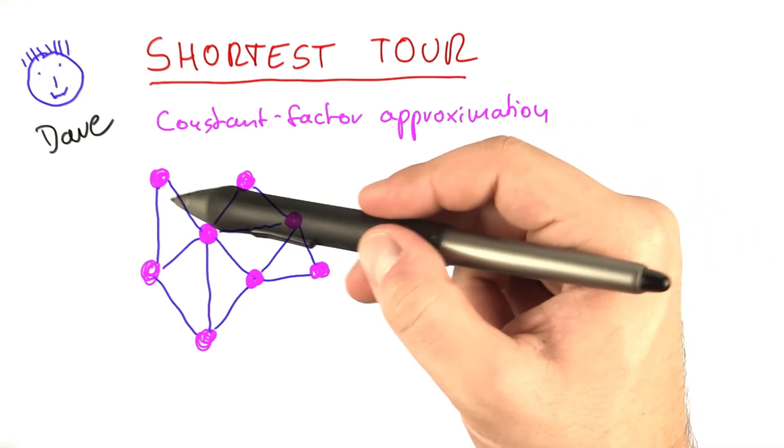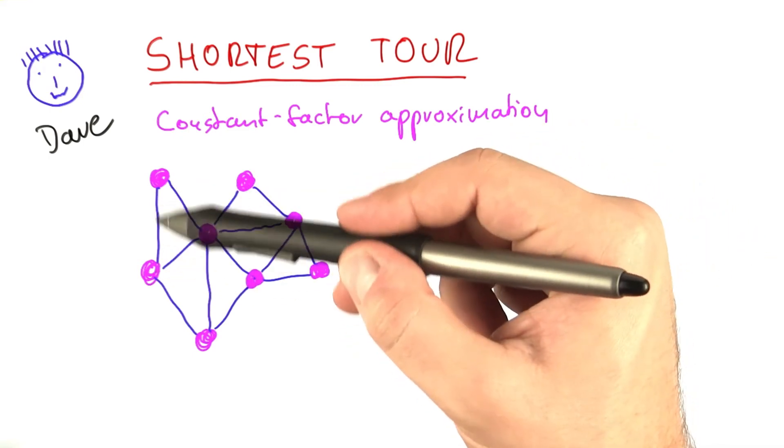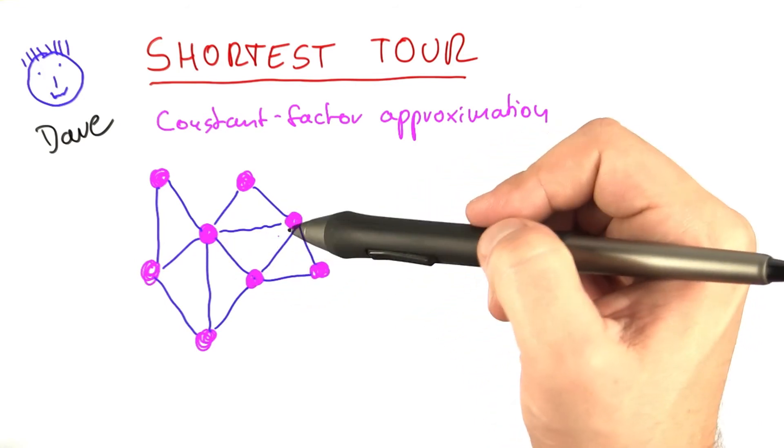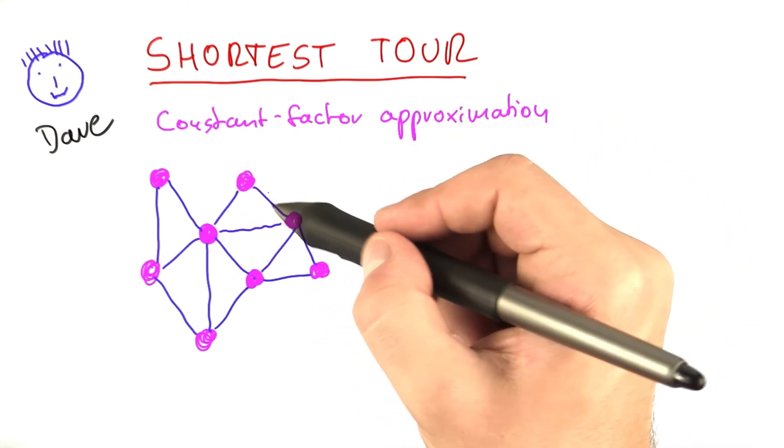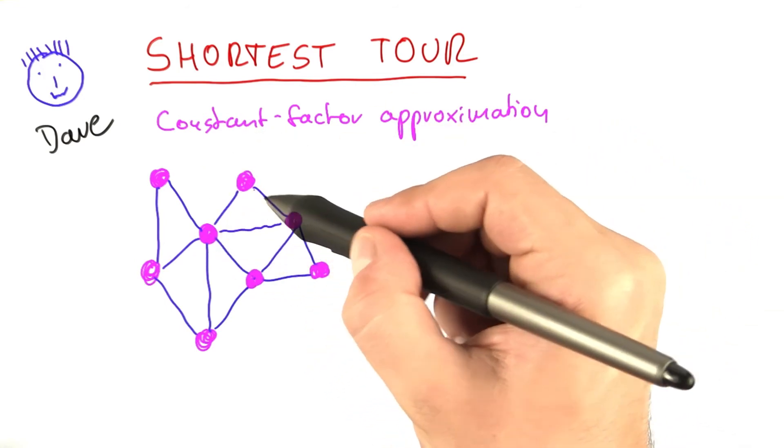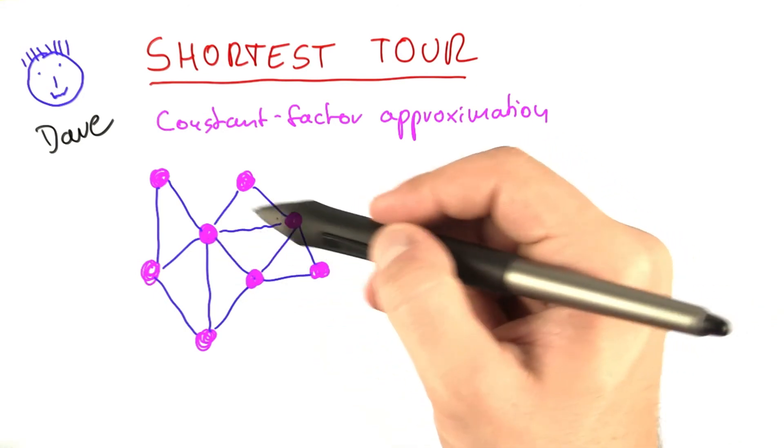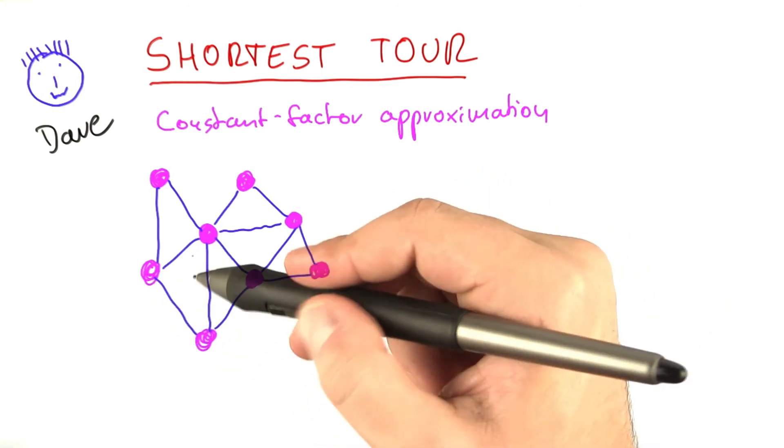Well, what that means is that you select edges so that you still keep the whole graph connected, but you don't have any cycles. So a cycle would be something like this where you can leave a vertex and then come back to it another way. So you select edges so that the whole graph is still connected, but there can be no cycles.